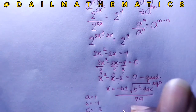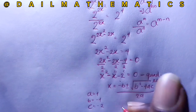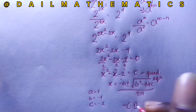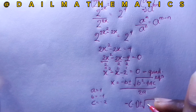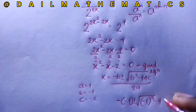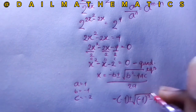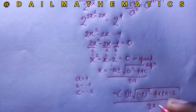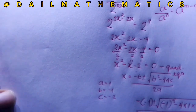Our coefficients are: a equals 1, b equals minus 1, and c equals minus 2. Substituting: x equals minus(−1) plus or minus square root of (−1) squared minus 4 times 1 times (−2), all over 2 times 1.